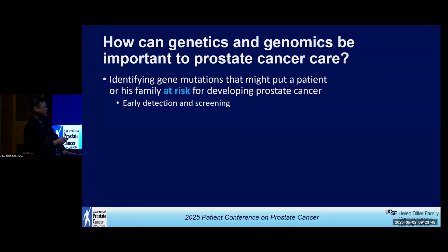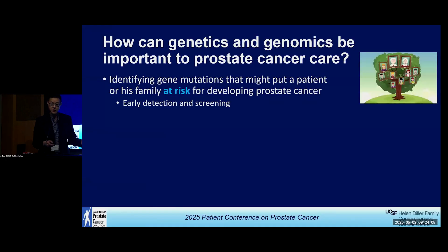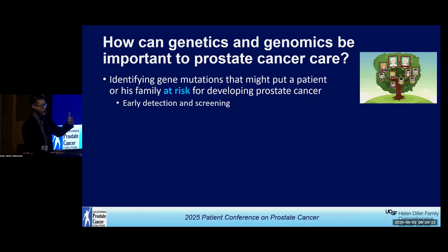How can we use genetics and genomics in prostate cancer care? I'll highlight three ways I think about it when I meet a patient in clinic. The first is identifying genes that might put a patient or his family at risk for developing prostate cancer — thinking about the family tree, early detection, and screening. For patients who have a strong family history where multiple brothers, grandfathers, fathers, or uncles have had prostate cancer, it really changes the way I think about the patient.